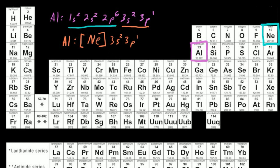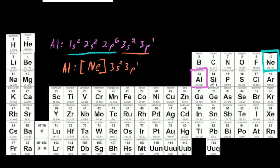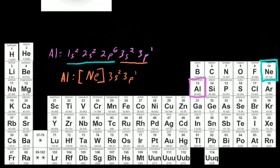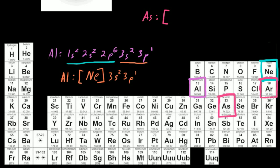Let's do another one — let's do arsenic. Arsenic is down there on the periodic table, its atomic number is 33. If we were going to write it all out, we'd have a whole bunch of entries: 1s2, 2s2, 2p6, and lots of those for all the different orbitals and subshells. Using the nearest previous noble gas notation, we would first find the nearest previous noble gas, which would be argon. So we can say arsenic's electron configuration is going to be the same as argon.